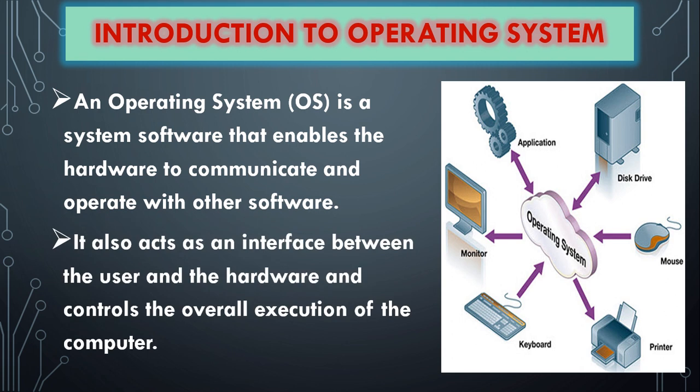It also acts as an interface between the user and hardware, and it is responsible for the overall execution of the computer. It also acts as a bridge between the user and hardware and it executes all the software. So the Operating System is the first computer activity control, and the software works based on the instructions.